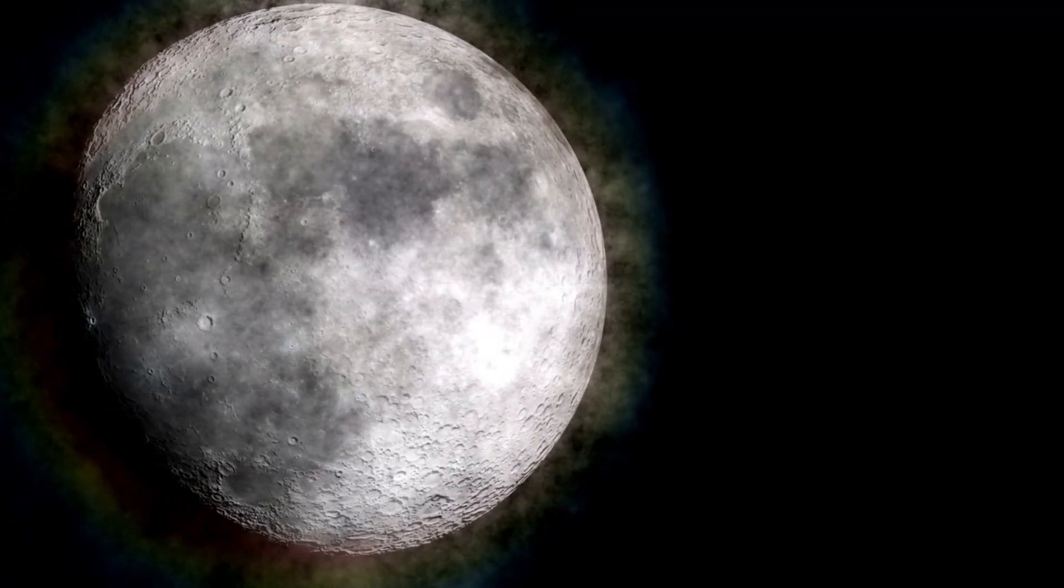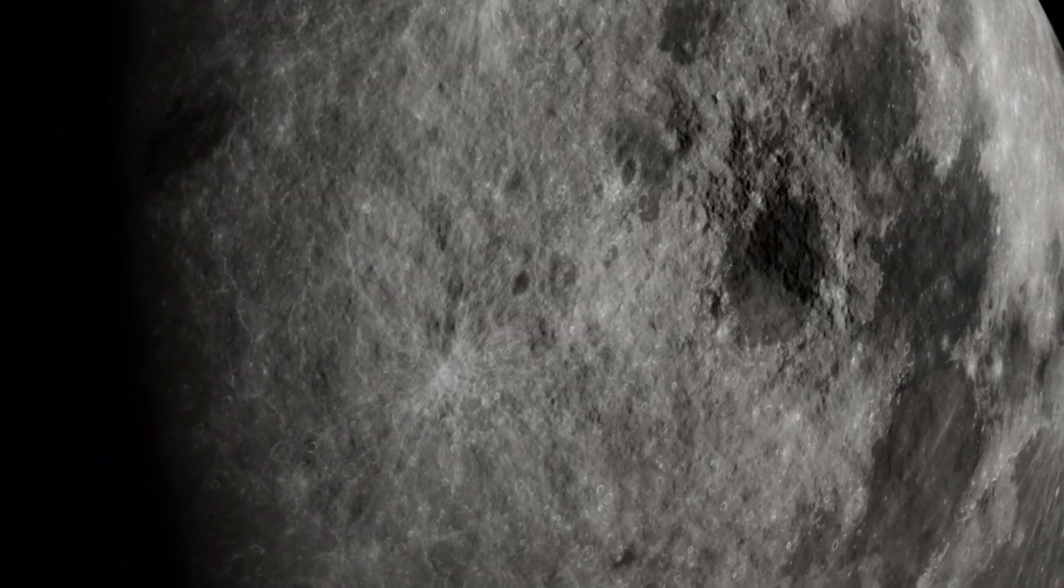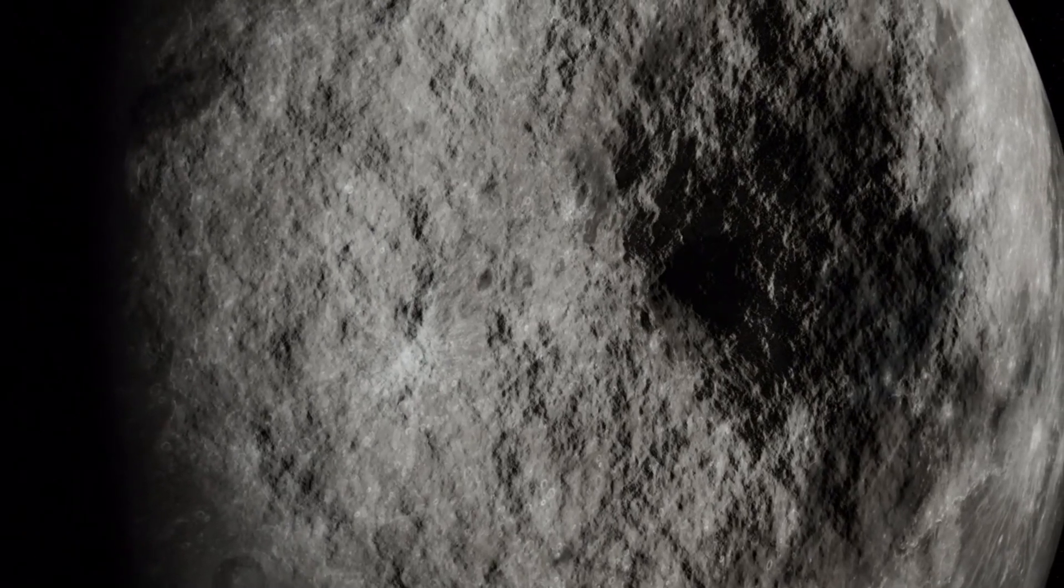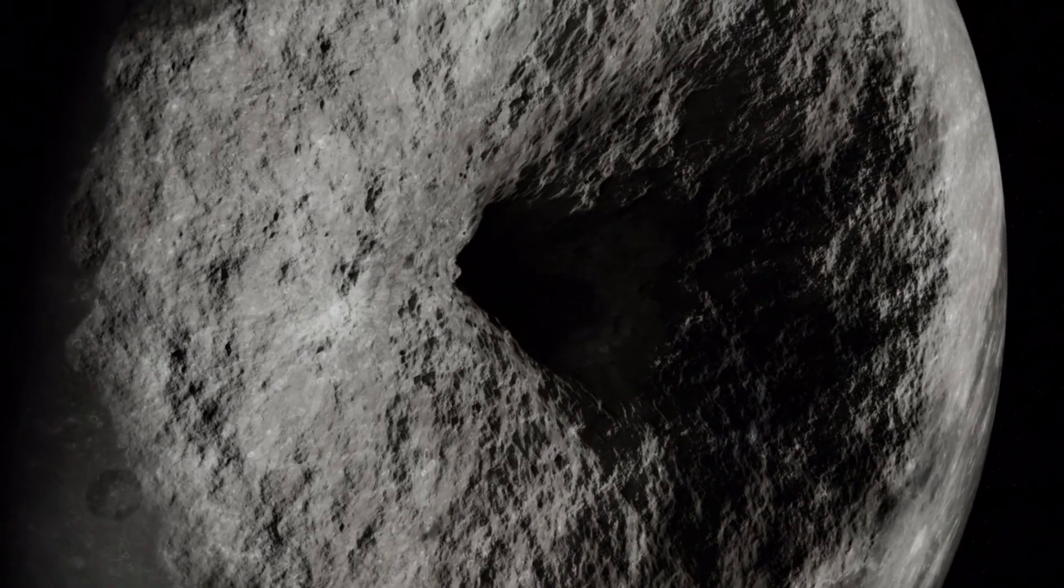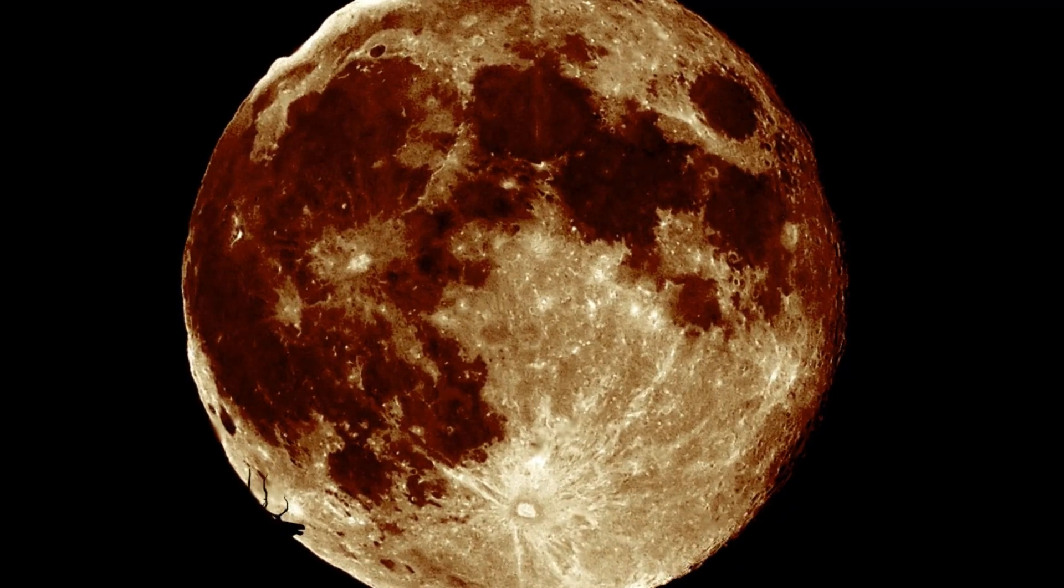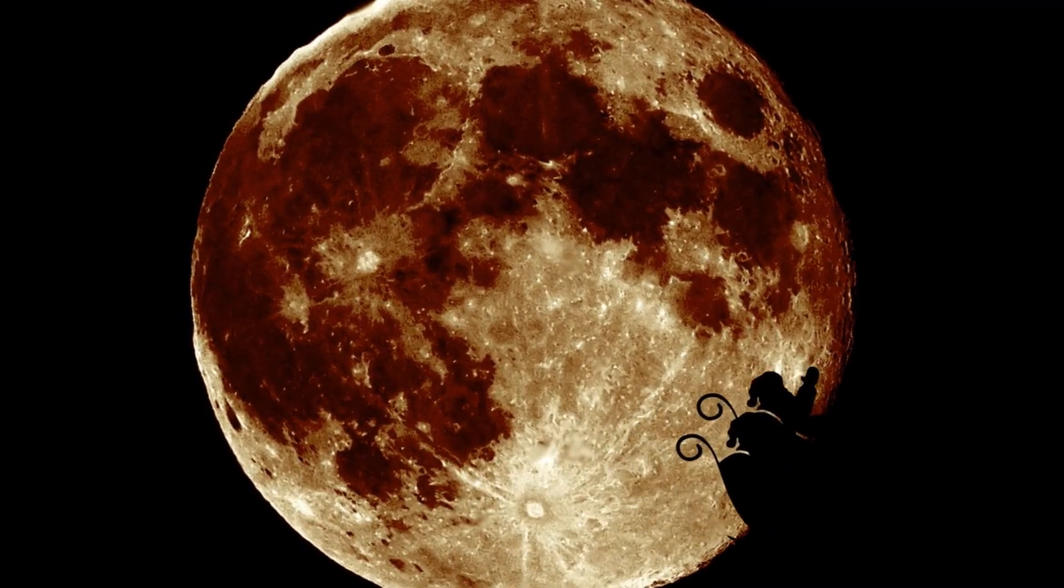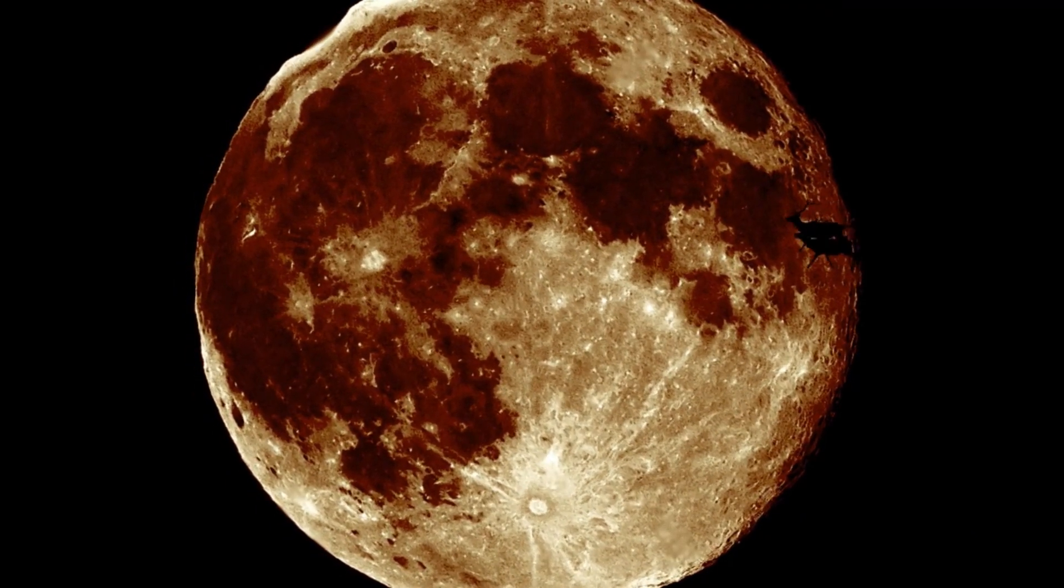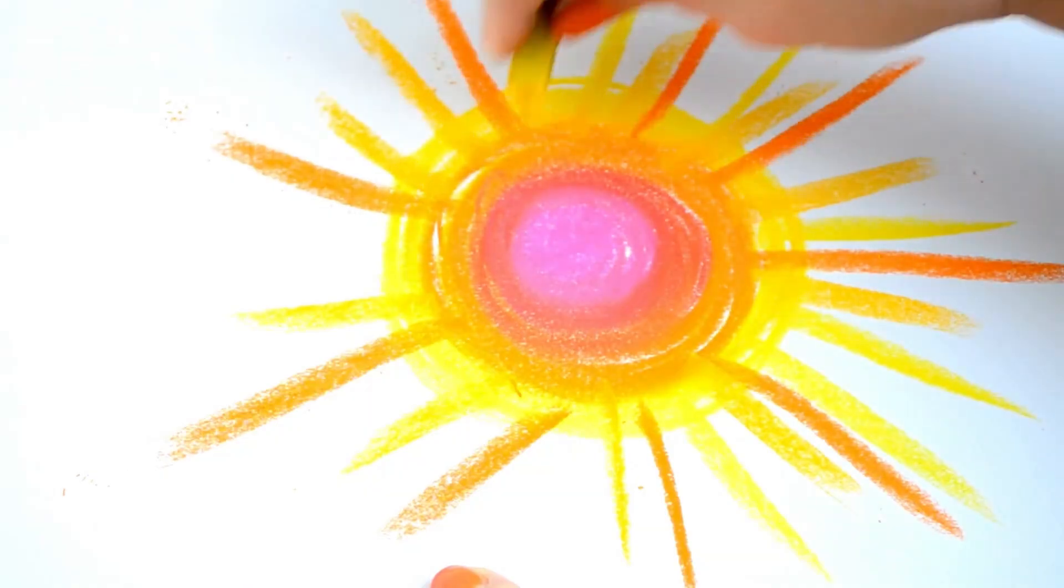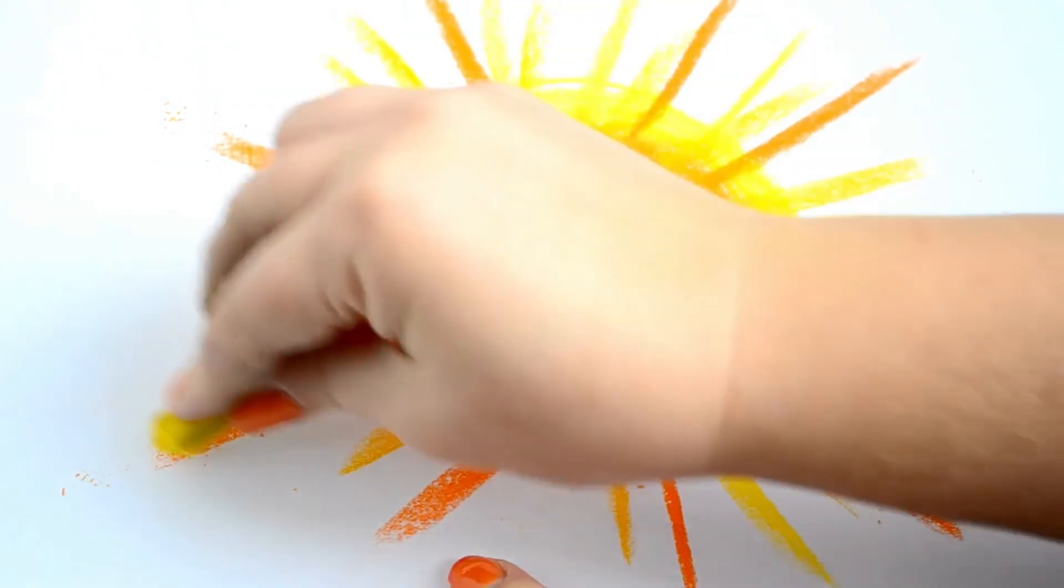We will begin our grand tour close to home with our immediate neighbor, the Moon. Due to the Moon's large apparent size in our sky, Hubble cannot capture its entire surface in a single image. Moreover, other missions such as NASA's Lunar Reconnaissance Orbiter provide far better images of the Moon, thus Hubble's time is better utilized elsewhere.